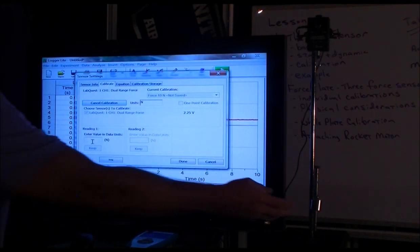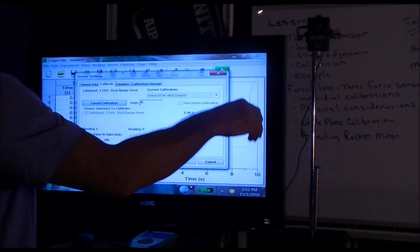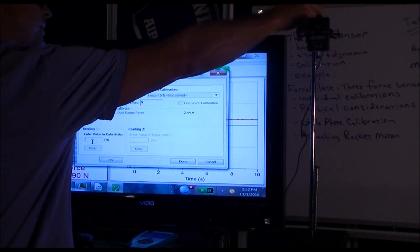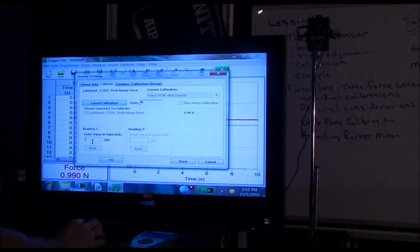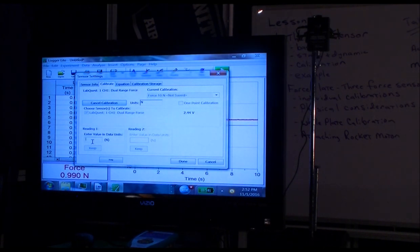And we want to essentially create zero force. So to create zero force, we pick up the hanging mass and we set it on something so it's not pulling down. So now we have zero force so we can enter zero newtons.